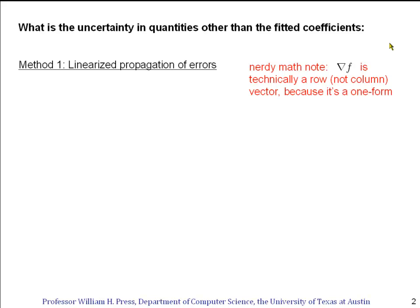In this segment, I'm going to show you two different methods. The first one is called linearized propagation of errors, and this goes back 50 or 100 years. A little math note: I'm going to write the gradient of a function f in this way. So that's a vector. Its components are the partial derivatives of the function f with respect to each of its arguments. And the nerdy math note is that this is a row vector, not a column vector, because it's a one-form.